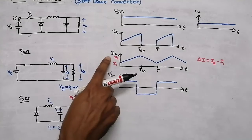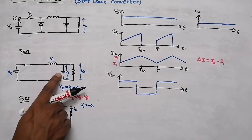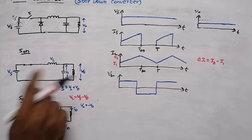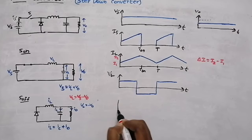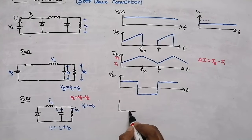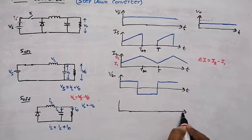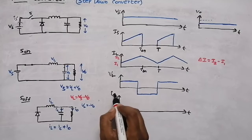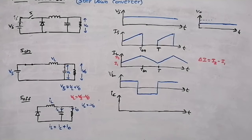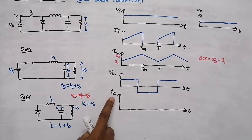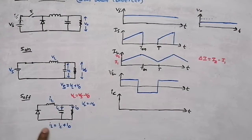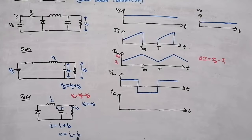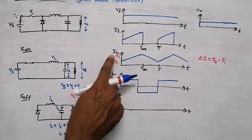Now we draw the capacitor current waveform. From the equation IC = IL − I0. We know the waveform of IL, but we need to find I0. The inductor current IL is the triangular waveform, and I0 is the output current.